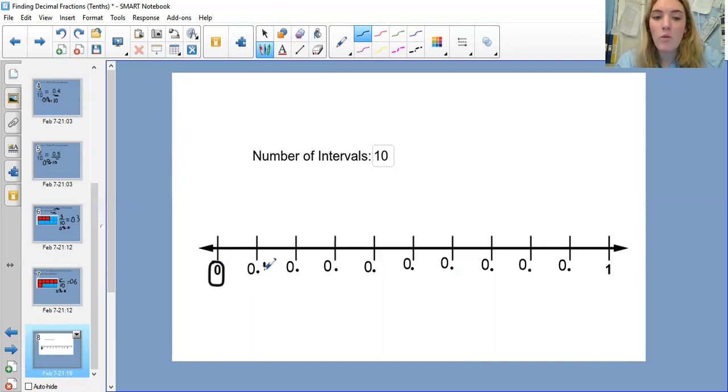We've got zero here. Then we write 0.1, 0.2, 0.3, 0.4, 0.5, 0.6, 0.7, 0.8, and then 0.9. You don't need to write 0.10, because you just move straight onto one. 0.10 is essentially the same as one.